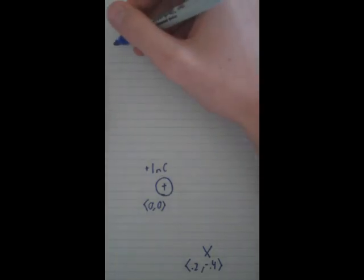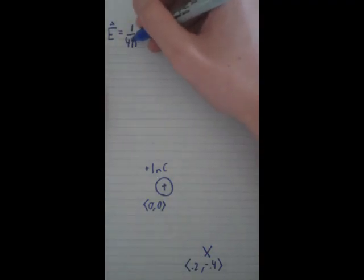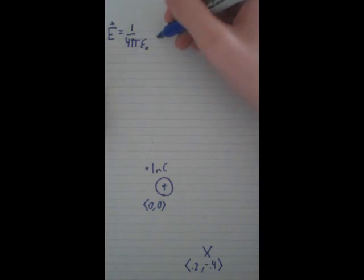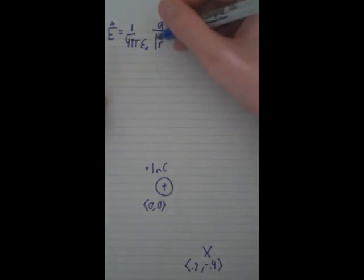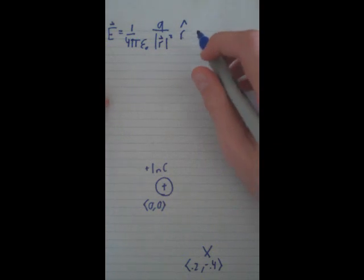If we want to find the electric field, we need to remember the electric field formula. The formula is E equals 1 over 4πε₀ times charge over the magnitude of distance squared times the directional vector. Now, the trickiest part is finding this directional vector, so why don't we do that first?